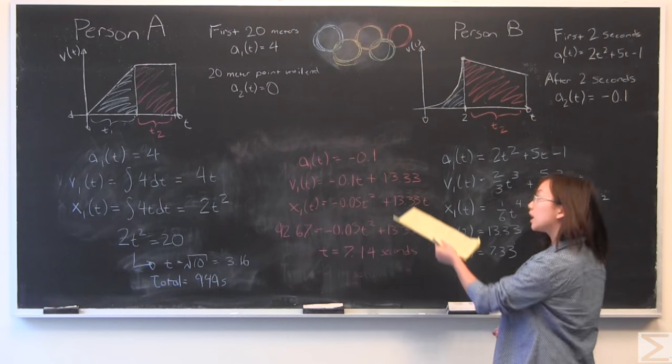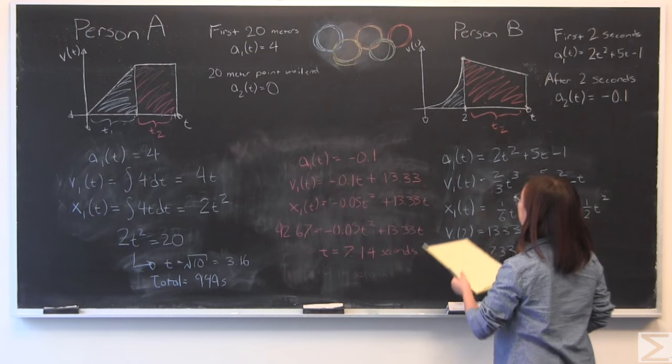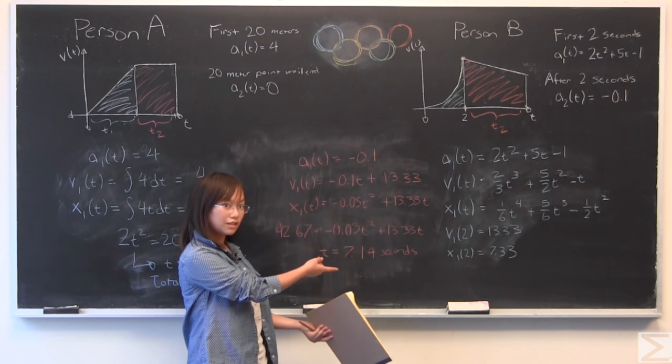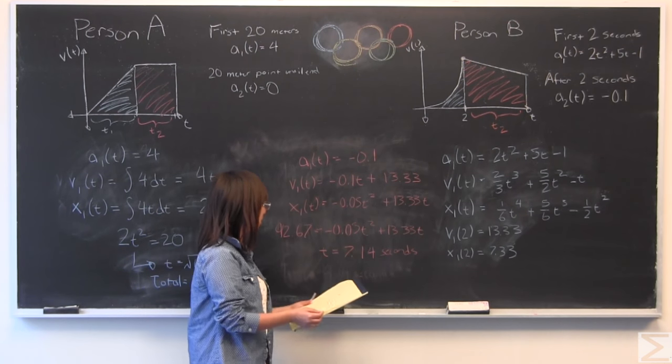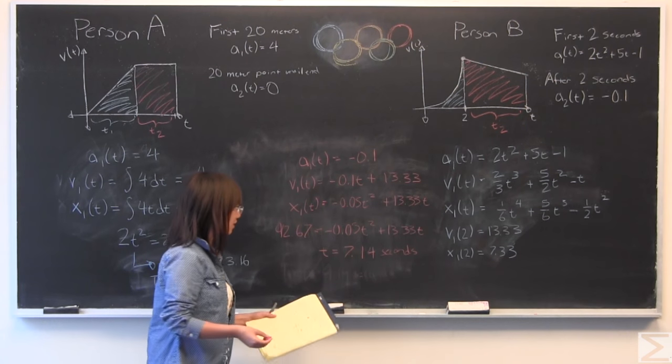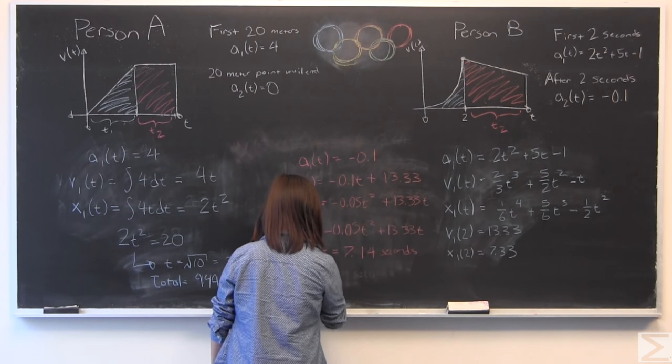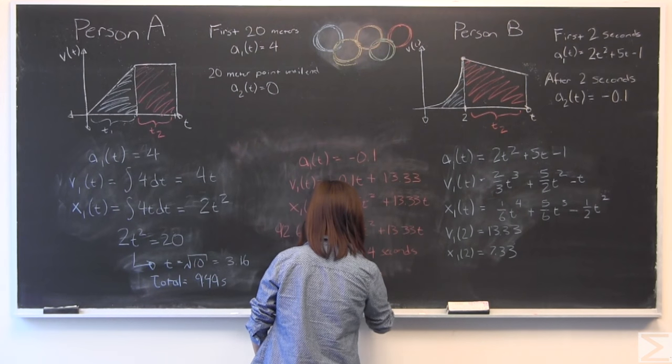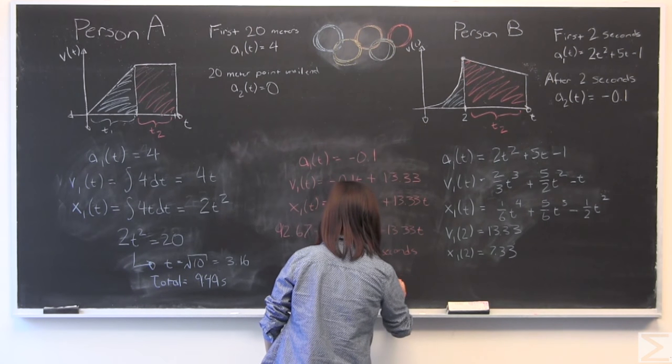You can get the total time traveled in this whole stretch by adding the two times together. We know that the first time was two seconds. We know that the second time, we just solved for it, it's 7.14 seconds. So I'm going to just add those together, and we get a total time of 9.14 seconds.